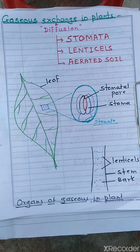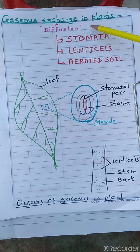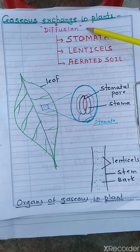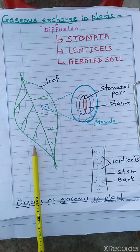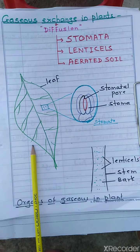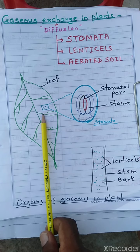Diffusion means the movement of gas molecules from a region of higher concentration to a region of lower concentration. Stomata are small pores found on the upper surface of a leaf and on the epidermis. These small pores are called stomata, and they help in gas exchange.